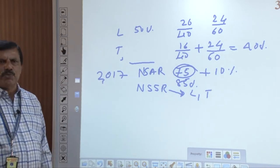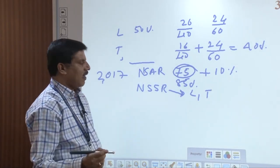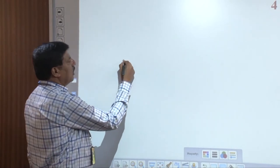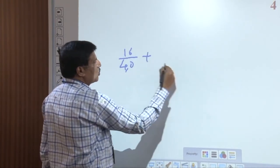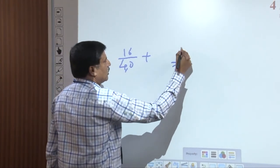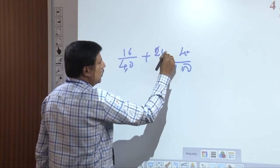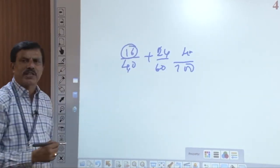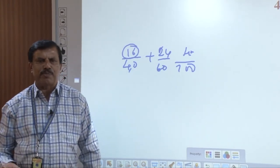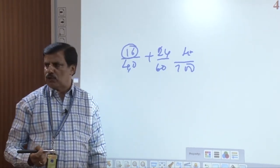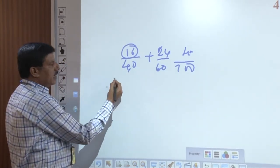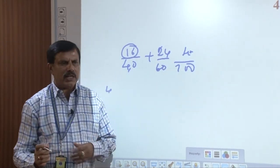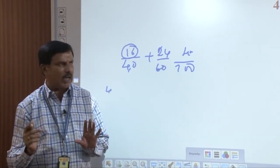If a student scores less than the minimum required in internal assessment, they are not eligible to appear for the main examination and must repeat the course. NSSR — Not Satisfied Sessional Requirement — is now applicable to both theory and lab. Students must also have a minimum 85% attendance, or at least 75% with a medical certificate, to be eligible for the main exam.